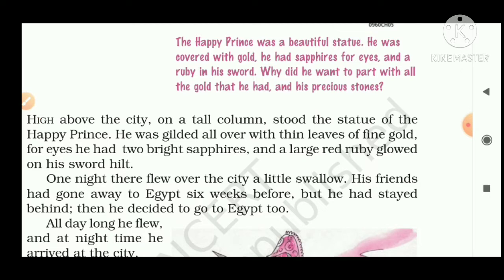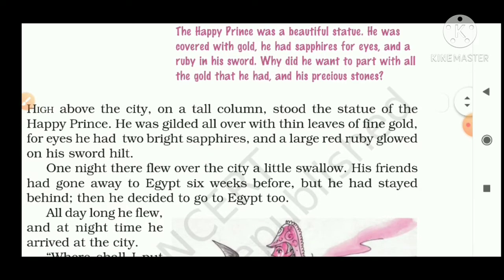The statue which is expressed here as beautiful belongs to that happy prince who used to live in happy condition in the past. His body was covered with gold, his eyes were made of sapphire, and there was a ruby in his sword. Why did he want to part with all these precious things he had? This is a mystery we will know when we study the chapter. So let us start.